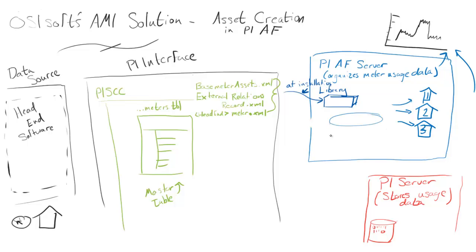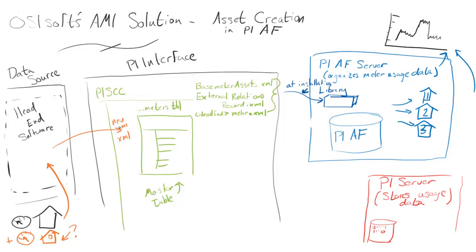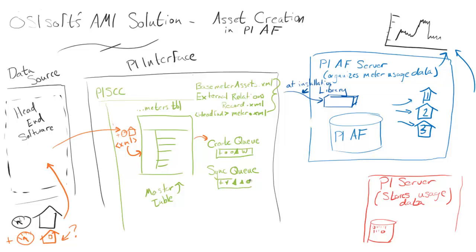This is all stored in the PI AF database. Now, upon creating a new meter, we're going to look at the flow of information of that structure data. First, it goes to the head-end software, and then it'll be sent to PI SCC and written to PI SCC as an XML file. It's also possible that PI SCC would go poll for this structure data, but for this example, we'll say it wrote an XML file on PI SCC. That'll be inputted into the master table, and then it'll be sent to a create queue. This create queue is creating a new asset on AF. Because we might be creating thousands of meters at once, there's a queue for them so that we can get to them as they come. There's also a sync queue, and we'll talk about that function in just a moment.